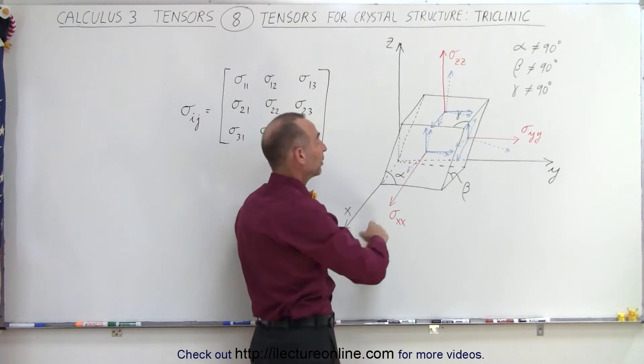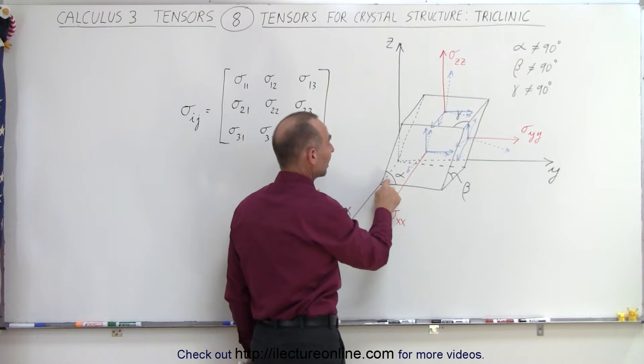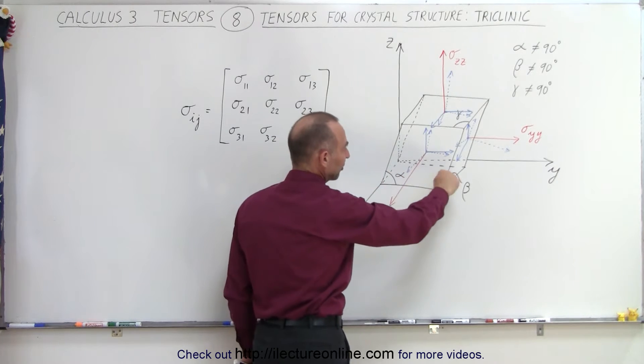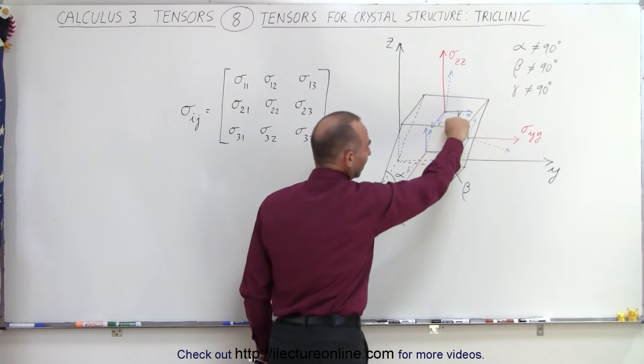None of them are equal to 90 degrees, so you can see that here's the angle alpha, there's the angle beta, and there's the angle gamma.